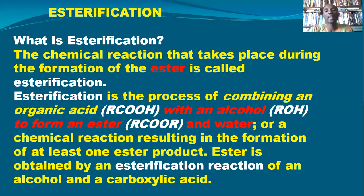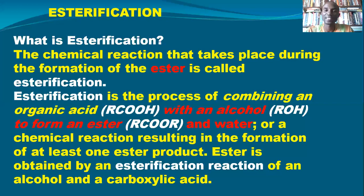Water will also be formed. So when you use ethanol and ethanoic acid, we are going to have ethyl ethanoate and water will also be formed. Esterification is a chemical reaction resulting in the formation of at least one Ester product. Ester is obtained by an Esterification reaction of an alkanol — which is alcohol — and carboxylic acid. One of the chemical behaviors of alkanols is the Esterification reaction — the reaction between alkanoic acid and alkanol to give you Ester and water. We call it Esterification. That is how Ester is being formed.